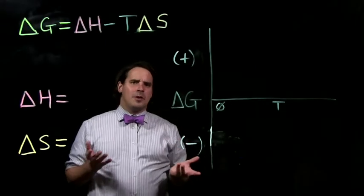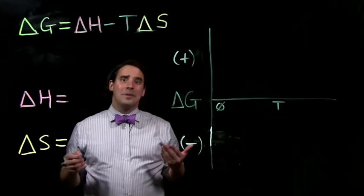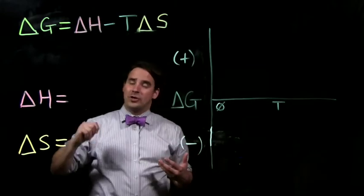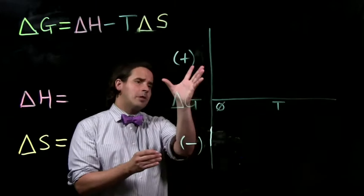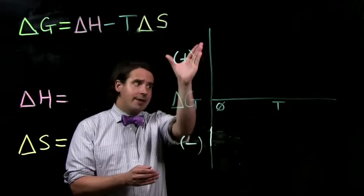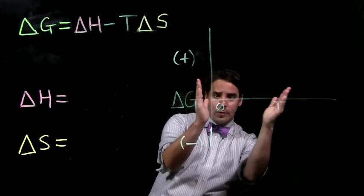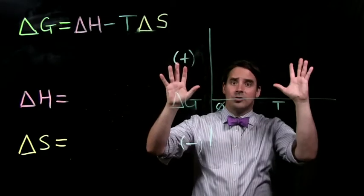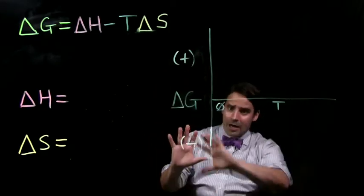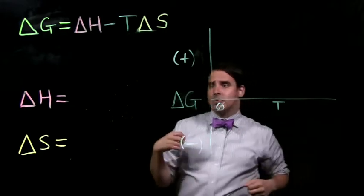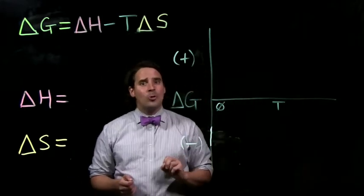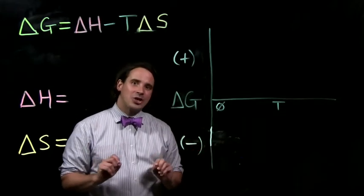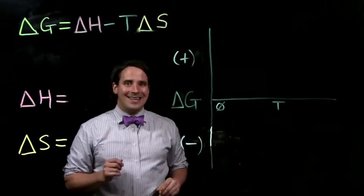Before we begin, let's take a few moments to get acquainted with the graph we'll be utilizing to help us predict the qualitative relationship between enthalpy, entropy, and free energy. We're plotting delta G — change in free energy — on the y-axis, and temperature on the x-axis, where they meet at zero. Up here we've got positive free energy corresponding to a non-spontaneous reaction, and down here we've got negative free energy corresponding to a spontaneous reaction. Always make sure to look at your axes to see what exactly you're looking at.